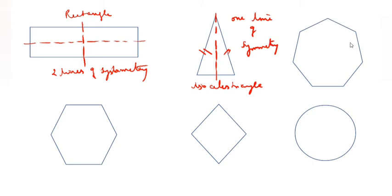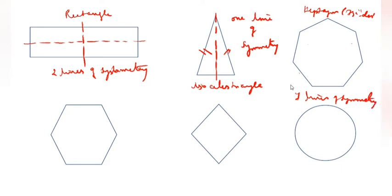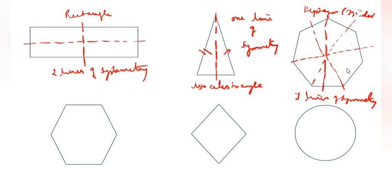This is 1, 2, 3, 4, 5, 6, 7 — so heptagon. Heptagon has 7 sides, so 7 sides means 7 lines of symmetry. How will we draw 7 lines of symmetry? This is 1, this is 2, this is 3, this is 4, this is 5, this is 6, this is 7. All should come in one place. So, this is 7 lines of symmetry.